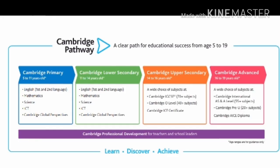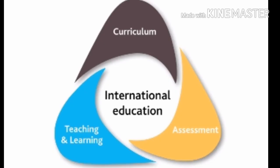The Cambridge pathway includes Cambridge Primary, Cambridge Lower Secondary, Cambridge Upper Secondary, and Cambridge Advanced. After passing the Cambridge Upper Secondary levels, students are certified by the International Cambridge Education Certificate. After completing the Cambridge Advanced levels, students receive the Cambridge AICE Diploma.